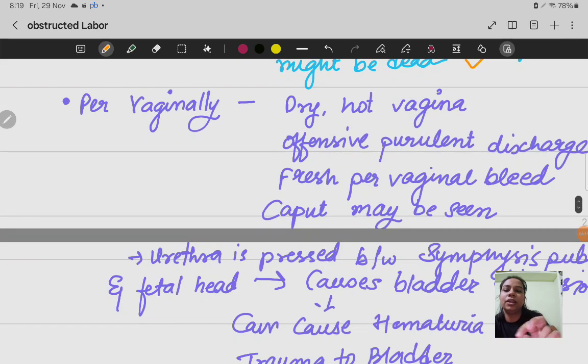Then per vaginally, if you examine the mother, what will happen is dry and hot vagina. The vagina of the mother will be dry and hot. Then offensive purulent discharge will be there due to obstructed labor.